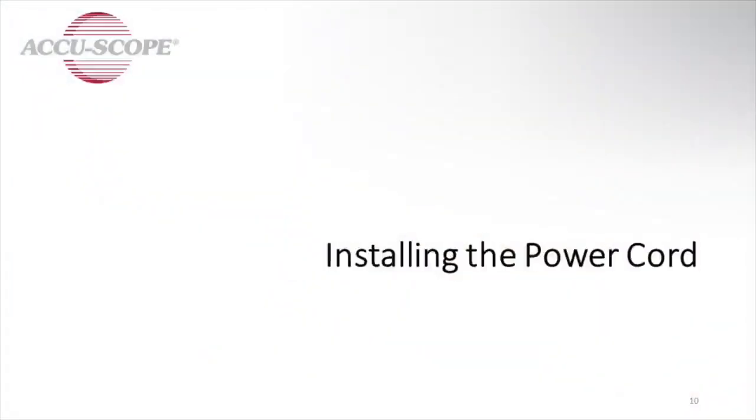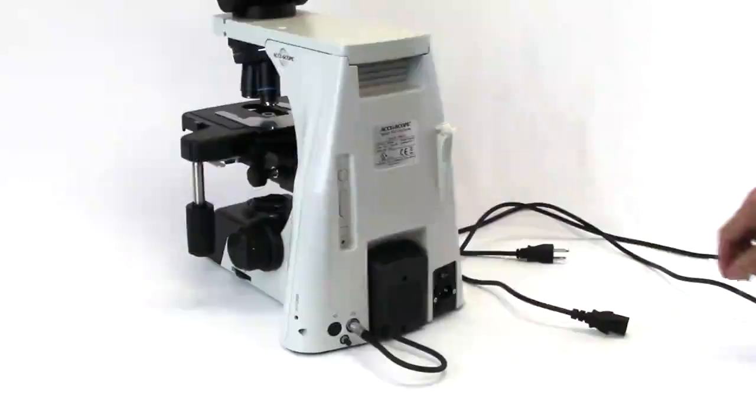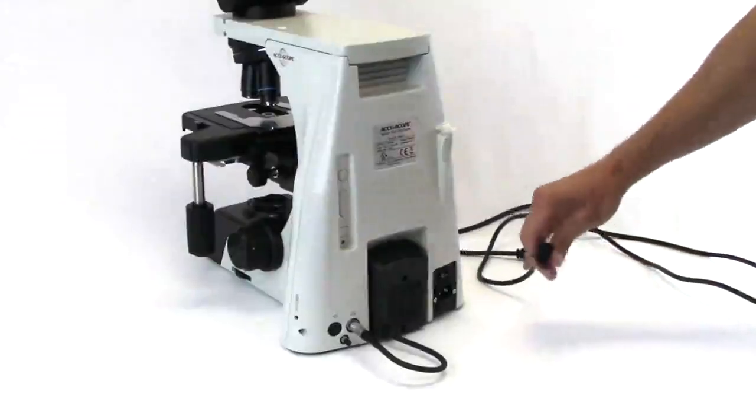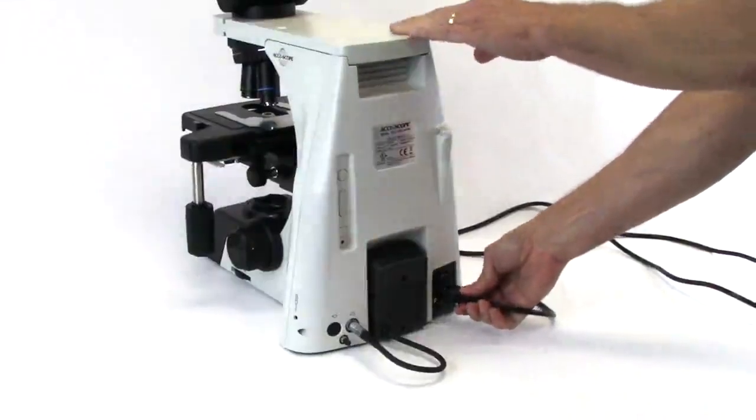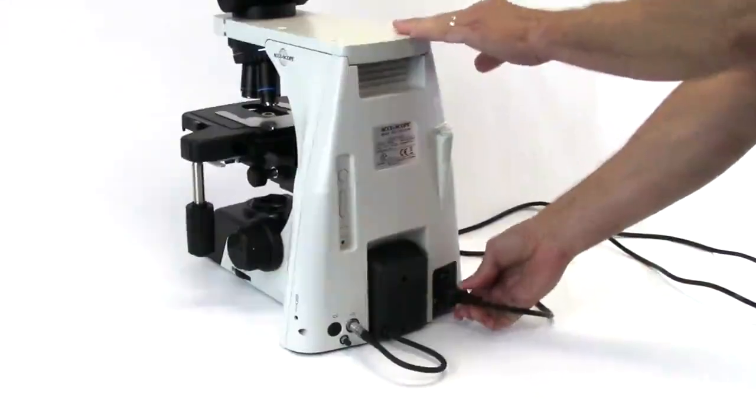Installing the power cord. Align and plug the female end of the power cord into the power cord socket on the back of the microscope. Plug the other end into a grounded three-prong outlet.